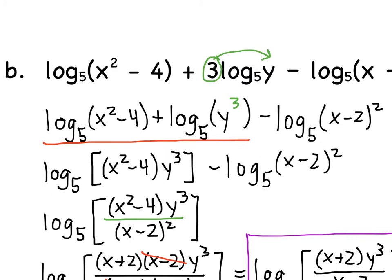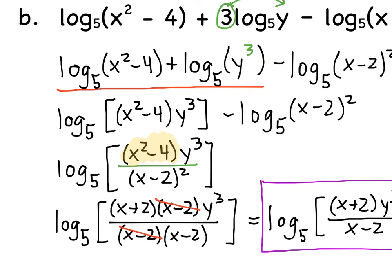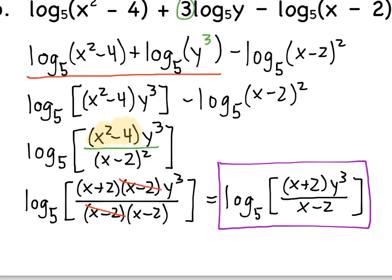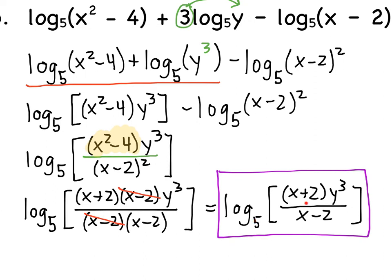We're not done yet — we should notice that X squared minus 4 can factor. Factoring gives us (X+2)(X-2). With (X-2) squared in the denominator, we can cancel one (X-2) from numerator and denominator. So our final condensed log is log base 5 of (X+2) times Y cubed, all over (X minus 2).